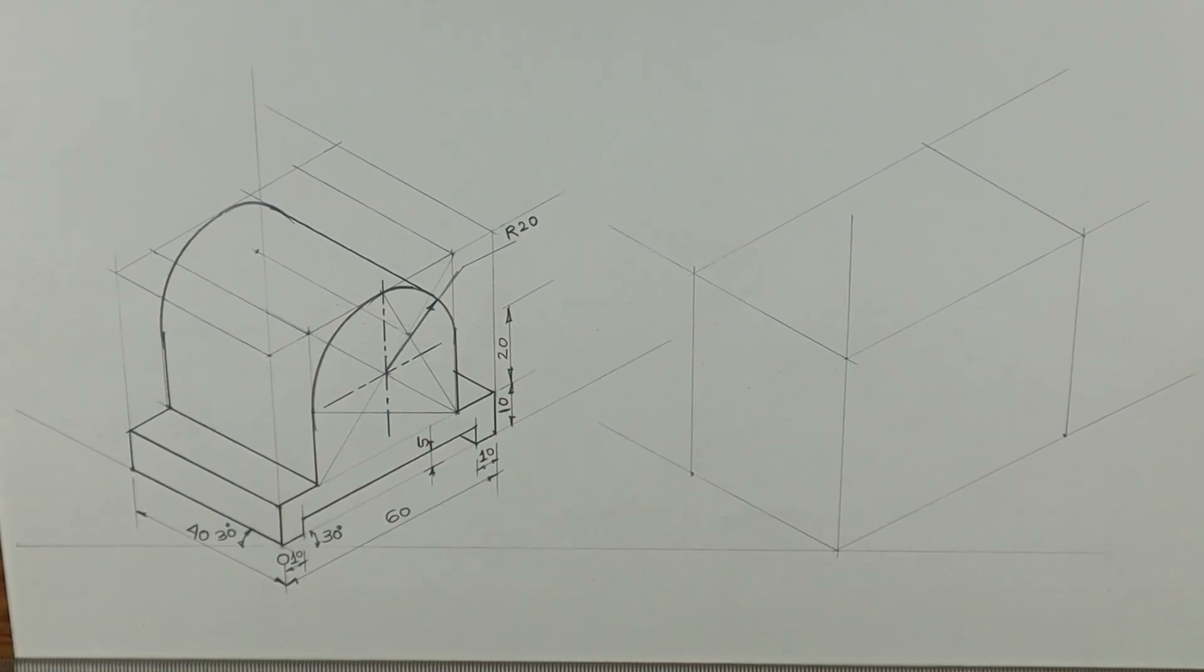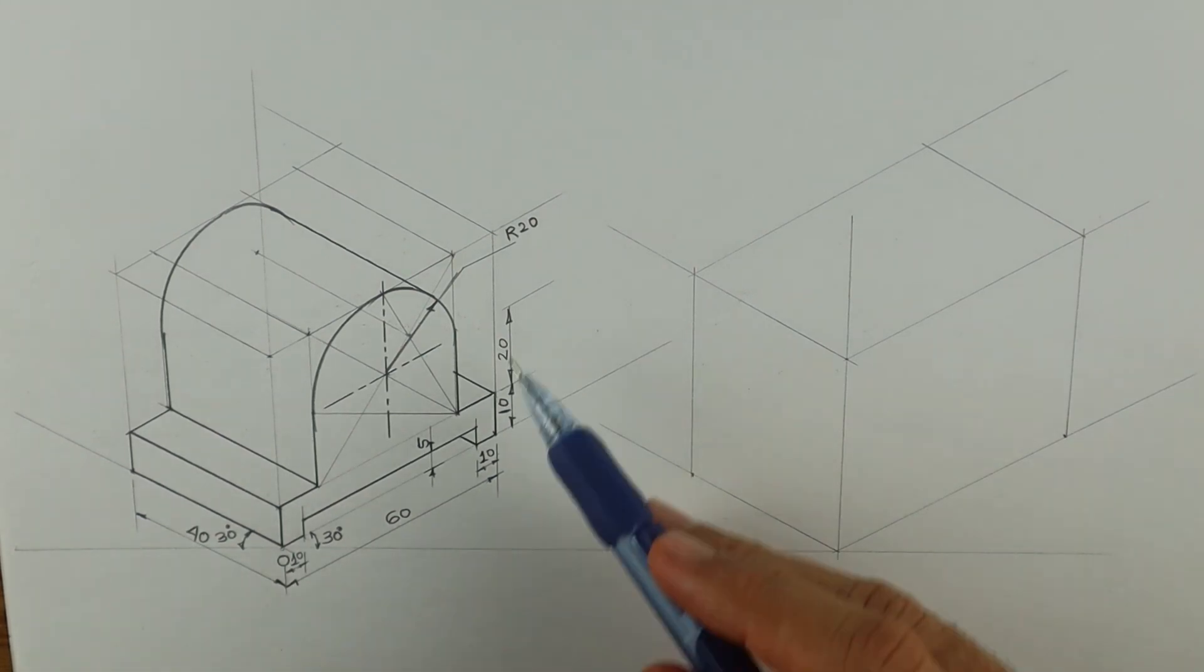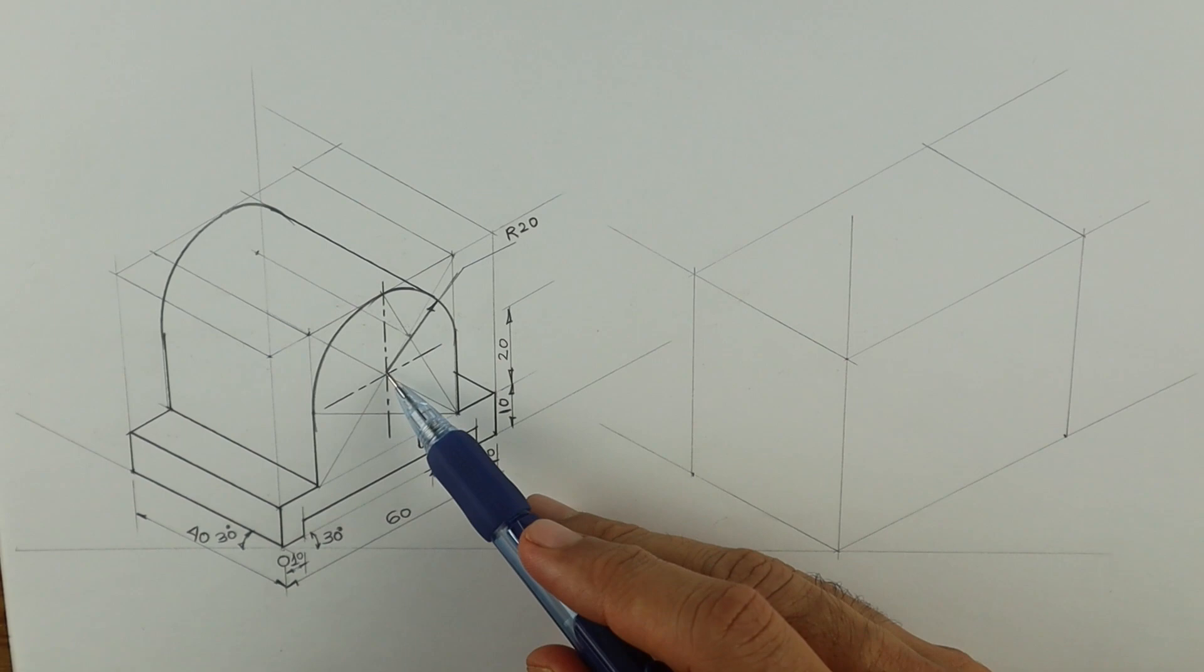Welcome to technical drawing. Today we will draw a copy isometric of this object where we have a circular element. Let's see the dimensions given: 60, 40 and 50, then 10, 20 and 20.